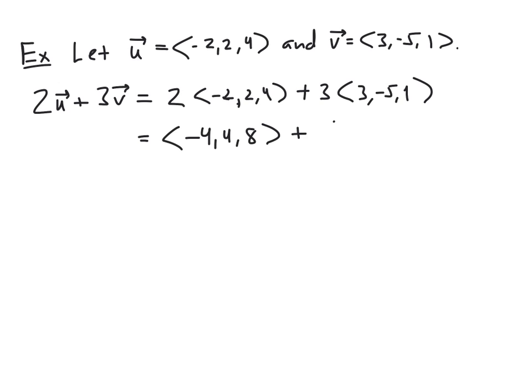Then we add component-wise. The first component is negative 4 plus 9, which is 5. The second component is 4 plus negative 15, which is negative 11. The third component is 8 plus 3, which is positive 11. So 2u plus 3v is the vector 5, negative 11, positive 11.